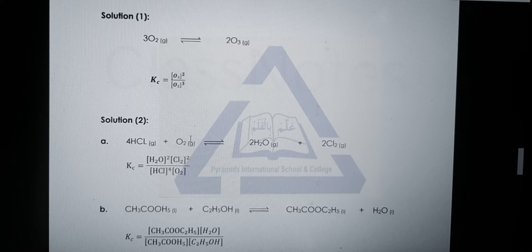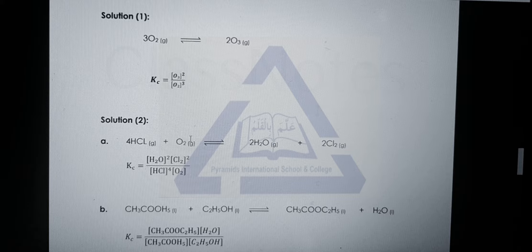Now look at self-assessment exercise 9.2. For this exercise you have to write the equilibrium constant expression for reversible reactions. Number one is the reaction between oxygen and ozone. To write the equilibrium constant expression, write the products' concentration in the numerator raised to the power of their moles, divided by reactants' concentration raised to the power of their moles. Here, ozone is the product written in the numerator, and oxygen in the denominator, with moles written as powers above the square brackets.